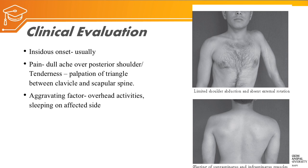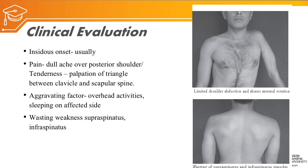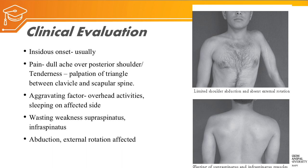The aggravating factor for suprascapular nerve injury is overhead activities and sleeping on the affected side. Since this nerve supplies supraspinatus and infraspinatus, injury can cause wasting or atrophy and weakness of these muscles, leading to reduced abduction — as supraspinatus assists initial abduction — and reduced lateral rotation, which is produced by infraspinatus.